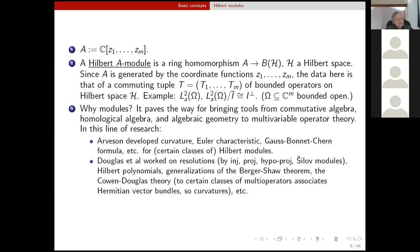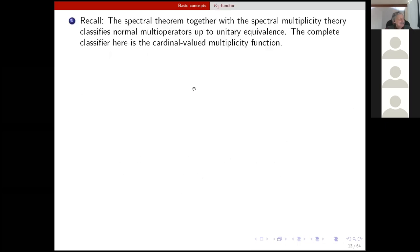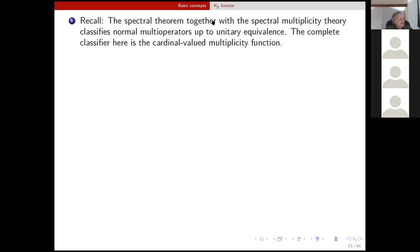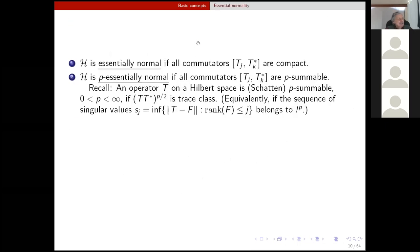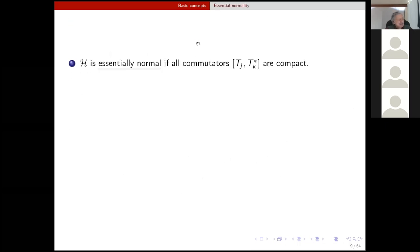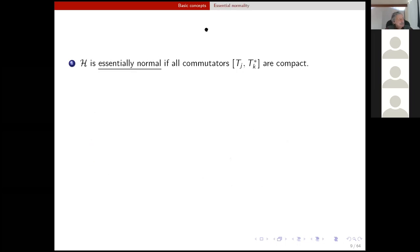Hilbert modules appear much earlier — maybe with Alain Connes, Kasparov. I'm soon going to define the K1 functor, which was first defined by Brown, Douglas, Fillmore, and then Kasparov generalized all these ideas. That is what I wanted to tell you about Hilbert modules. The next thing is the important notion of essential normality.